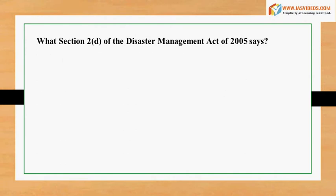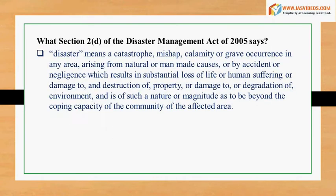What does Section 2D of the Disaster Management Act of 2005 say? Disaster means a catastrophe, mishap, calamity or grave occurrence in any area, arising from natural or man-made causes, or by accident or negligence, which results in substantial loss of life or human suffering or damage to and destruction of property, or damage to or degradation of environment, and is of such a nature or magnitude as to be beyond the coping capacity of the community of the affected area.